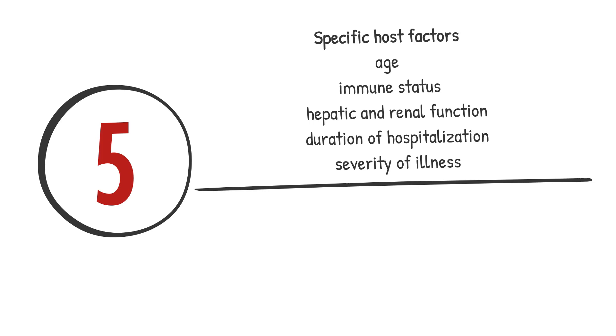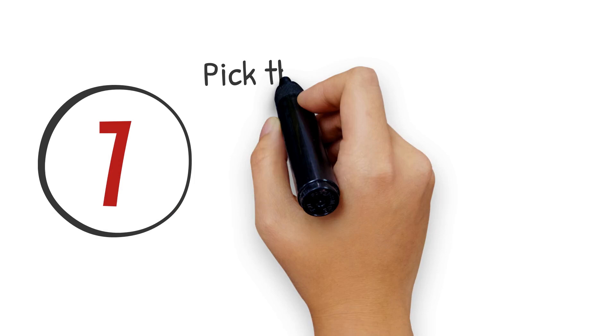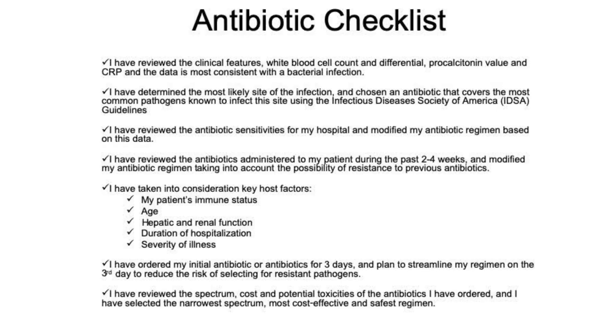Step 5: Take into account specific host factors — age, immune status, hepatic and renal function, duration of hospitalization, and most importantly, the severity of illness. More severely ill patients warrant coverage with broader-spectrum antibiotics. Step 6: At three days, streamline your antibiotic regimen based on culture results and the clinical response. And finally, Step 7: Pick the narrow-spectrum, most cost-effective, least toxic regimen. I recommend using this seven-point checklist that can be downloaded from the website.